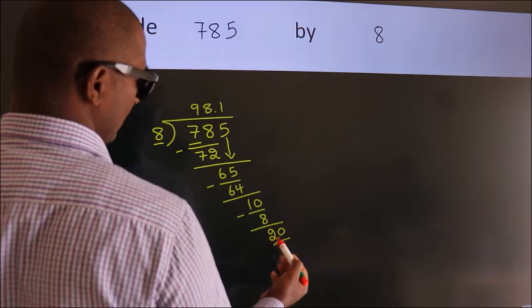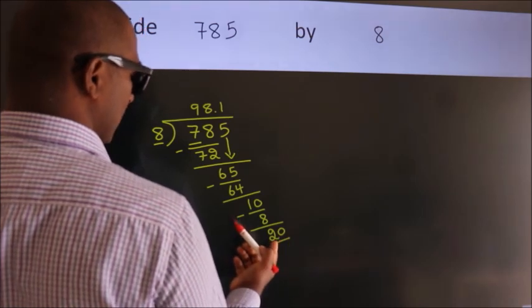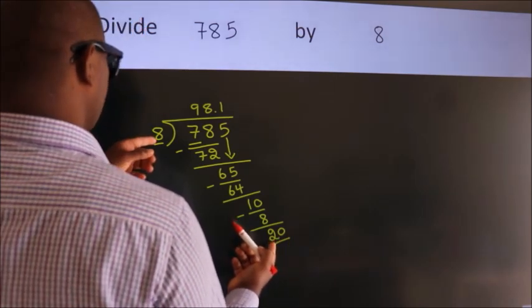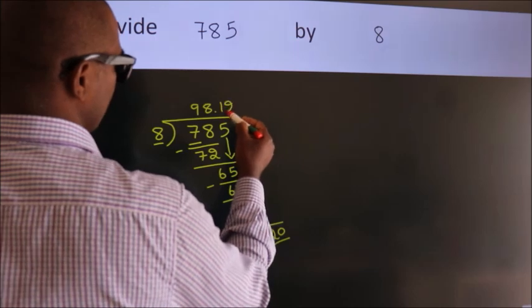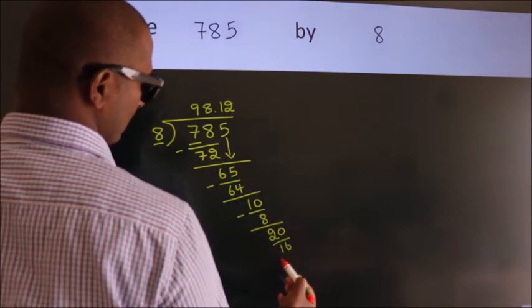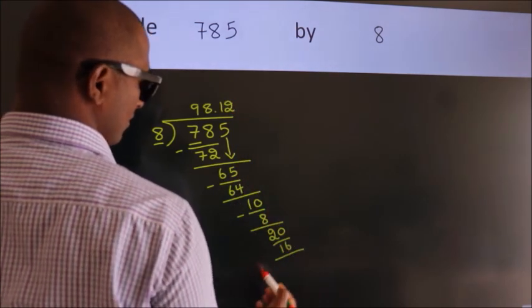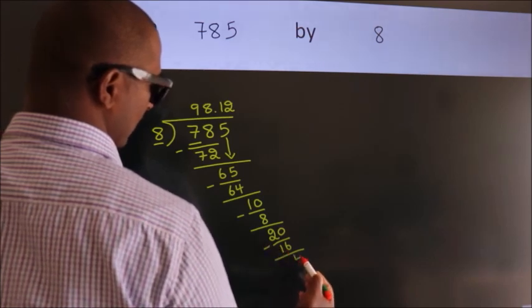So 20. A number close to 20 in 8 table is 8 twos, 16. Now, we subtract. We get 4.